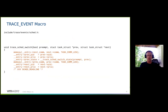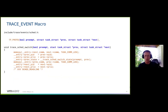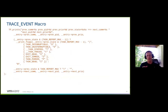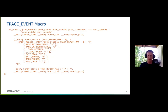The TP_fast_assign section is how data gets written into the ring buffer. The entry is a structure mapped directly on top of the ring buffer — there's no copy. You allocate space on the ring buffer just enough for the entry structure, then fill it in via the entry variable. The TP_printk section defines how to print the event — it's used when you cat the trace file, and it reads the raw data and exports it to user space. The format file also shows this print format so that user-space tools can read the raw data and parse it identically.